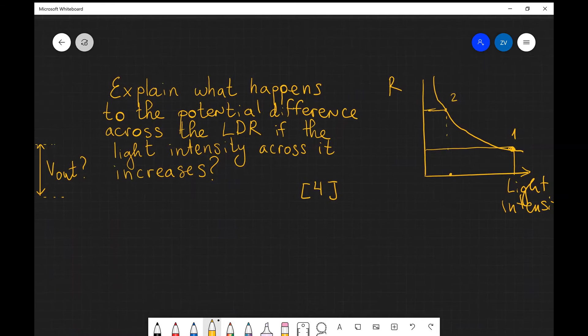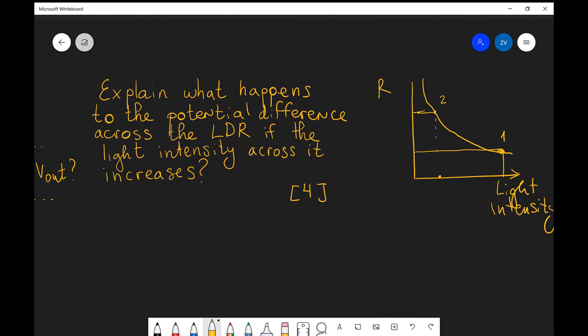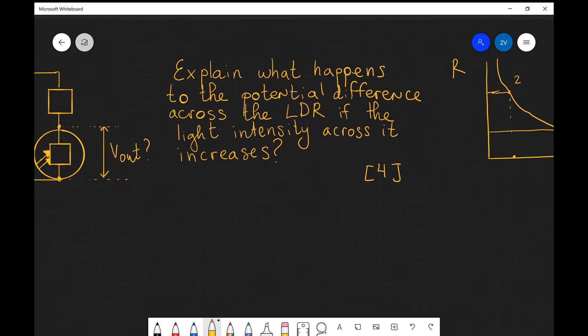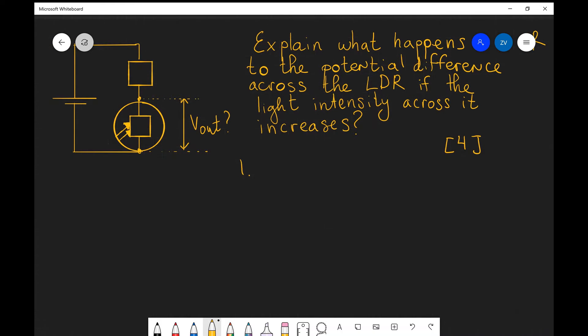Okay well let's put this into marking points so we can see that as the light intensity increases, the resistance will decrease. So our first marking point will be that the resistance of the LDR will decrease as light intensity increases.